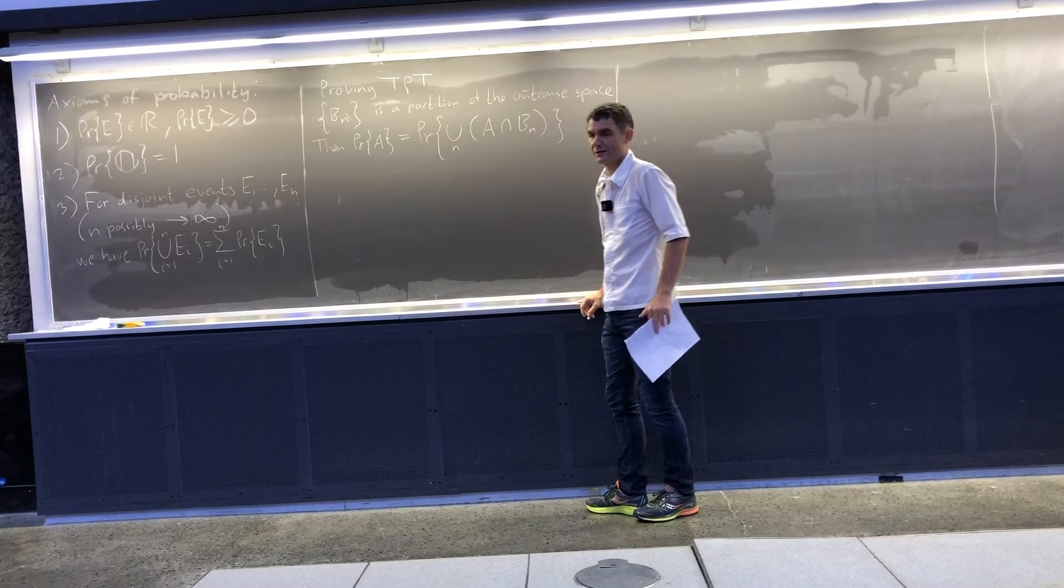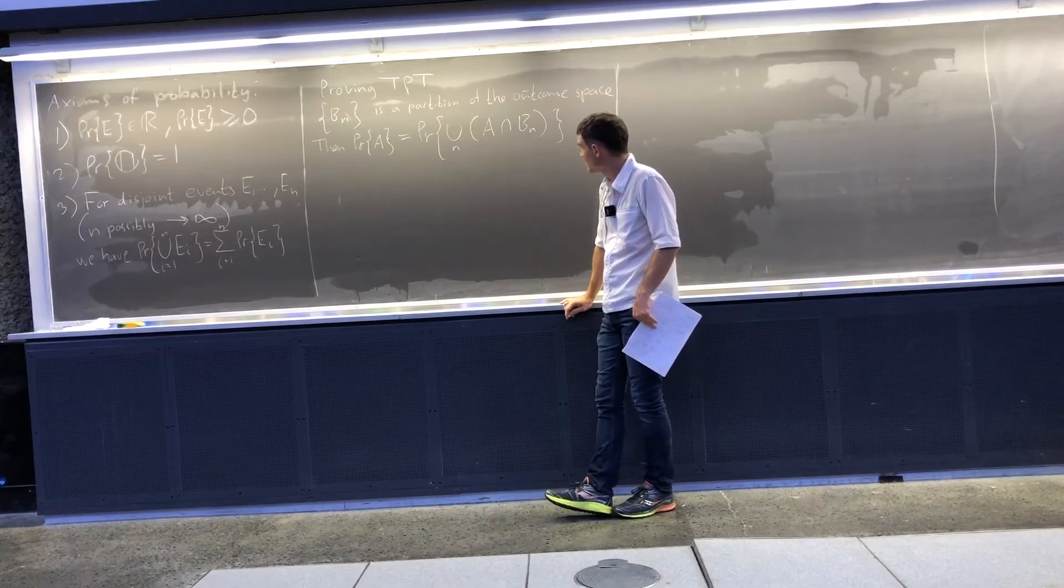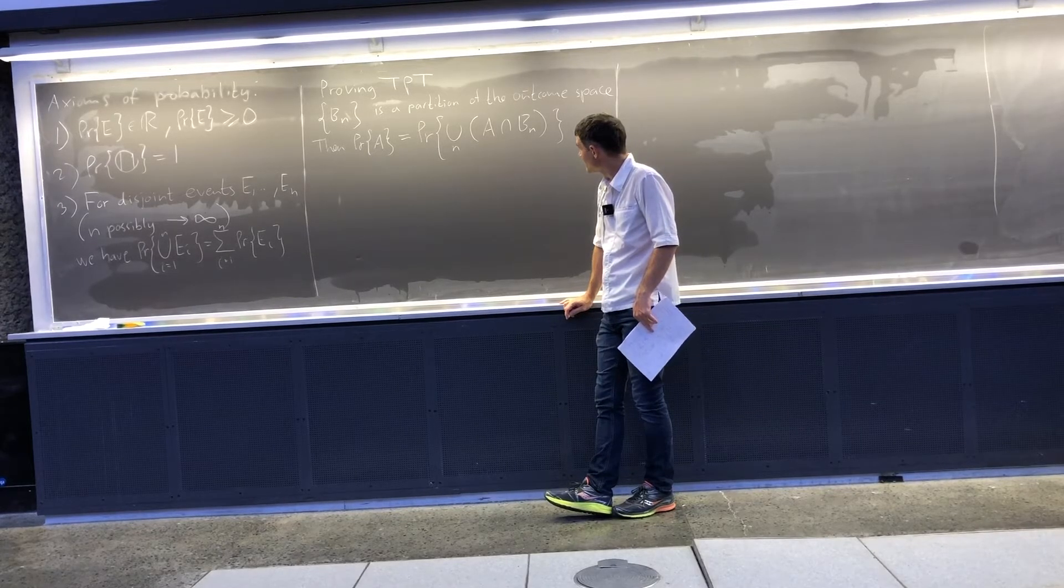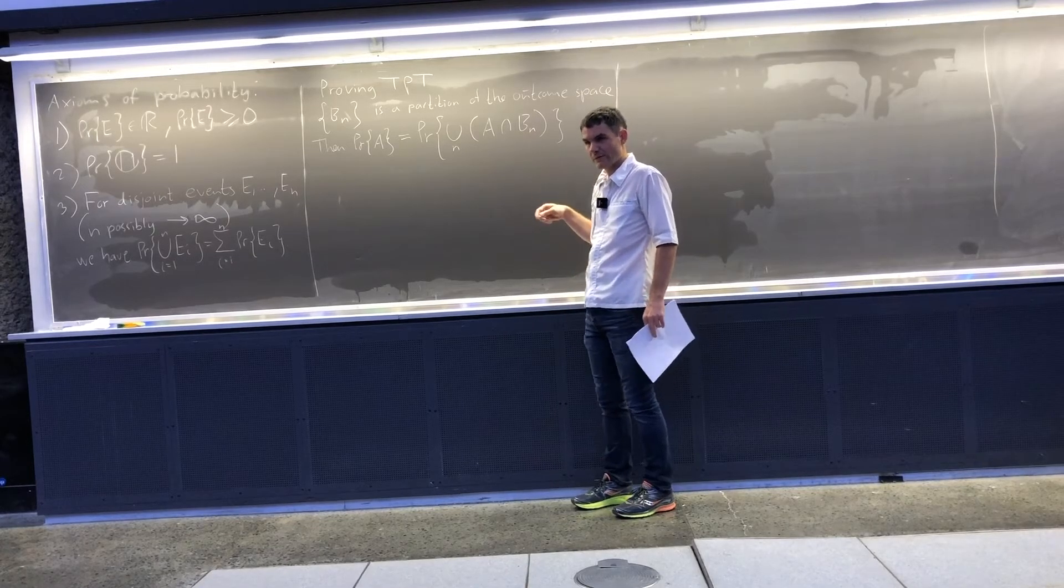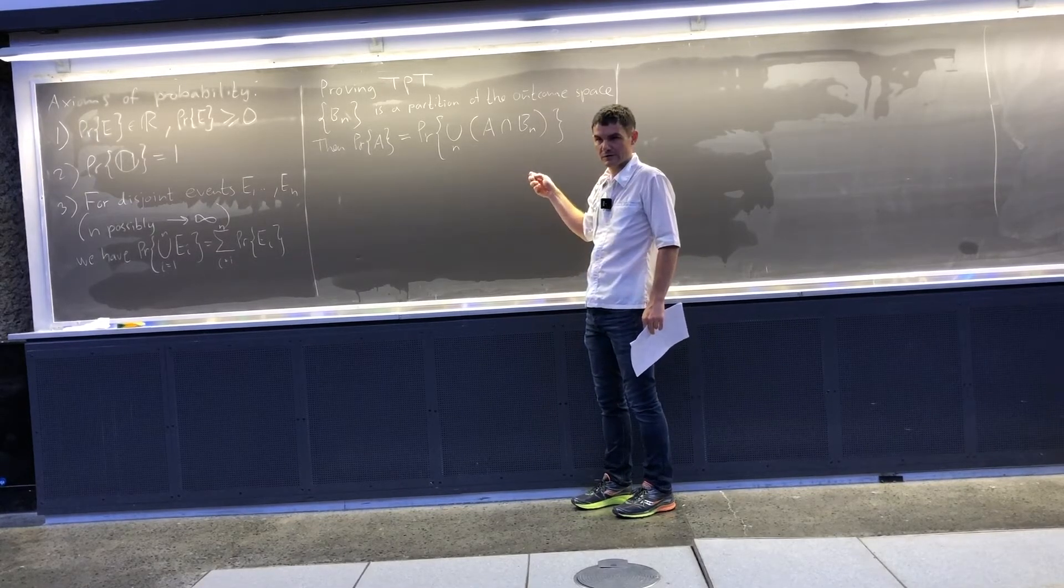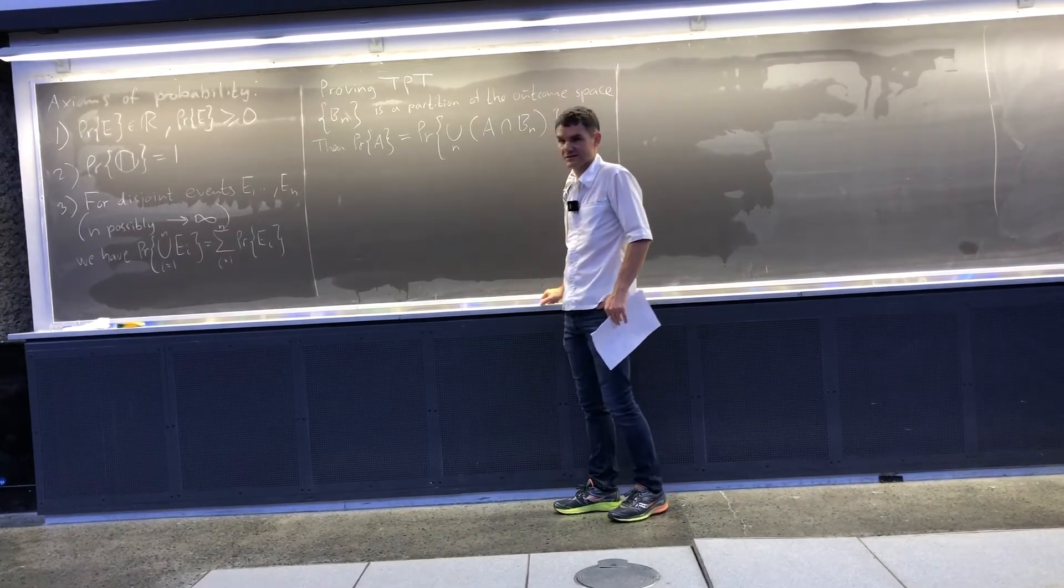This makes kind of sense. You can just construct this by a Venn diagram. You must be able to split A up between A and any of the Bn's in such intersections.